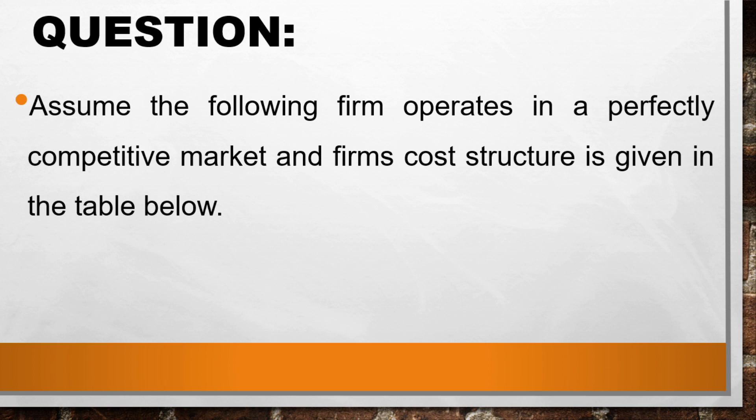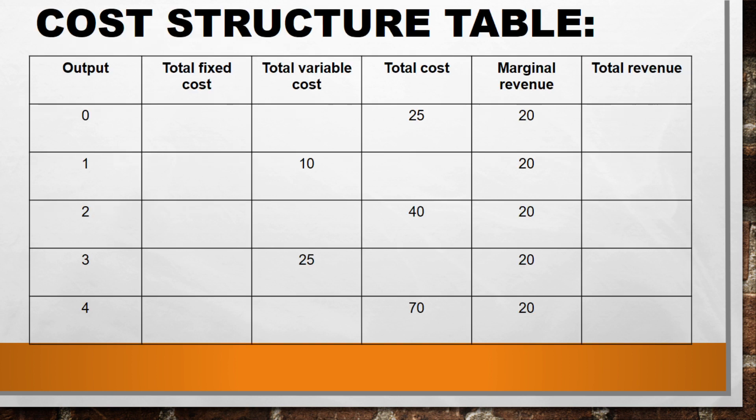So let's look at the table. You are provided with the cost structure table and asked to fill in the missing blank columns. Before you do that, you have to understand the items provided and know what they mean and how to calculate them. You are provided with output, which is the number of goods or services produced, or the quantity. You are also provided with total fixed costs. Total fixed costs are costs that are fixed or that remain the same throughout the production of goods and services — they do not vary with production at all.